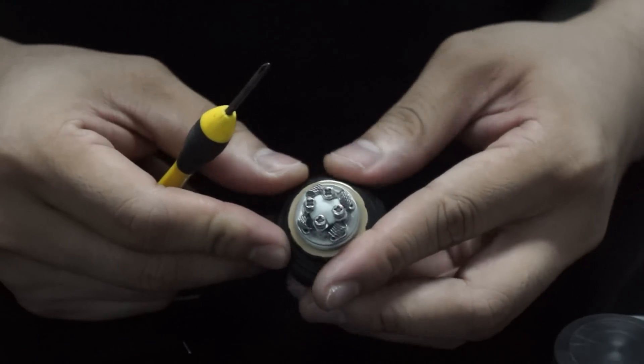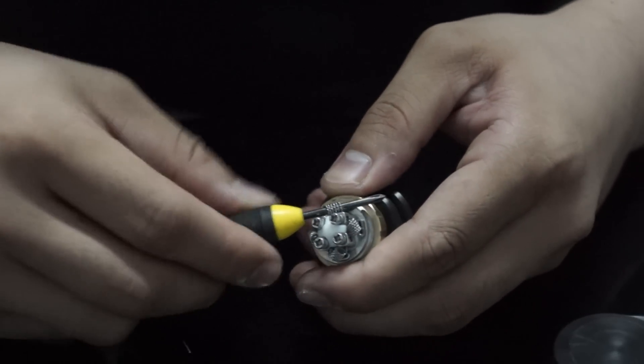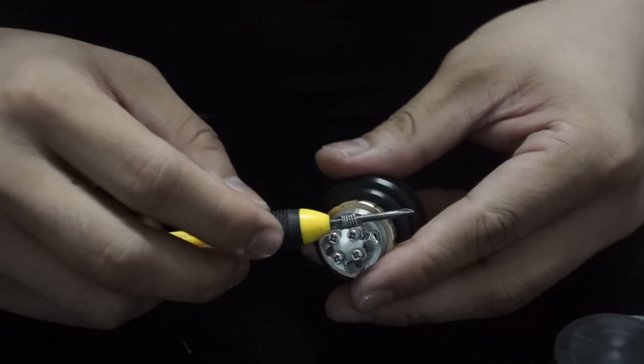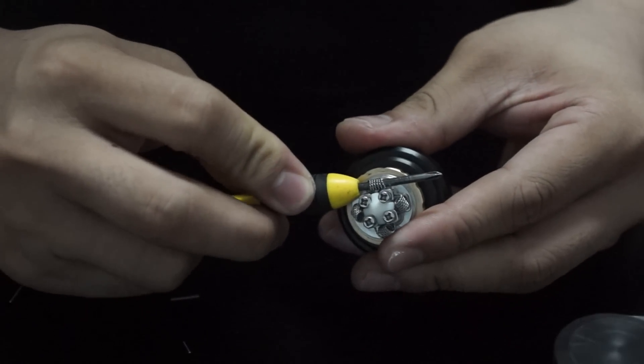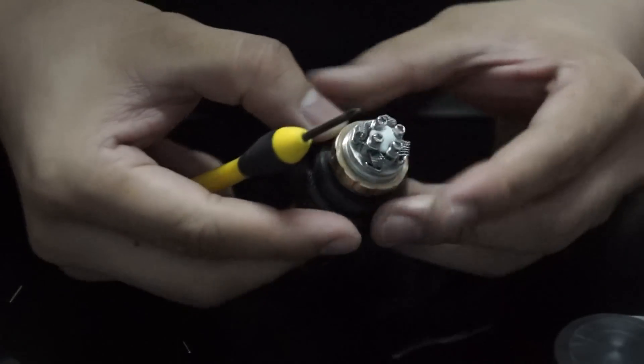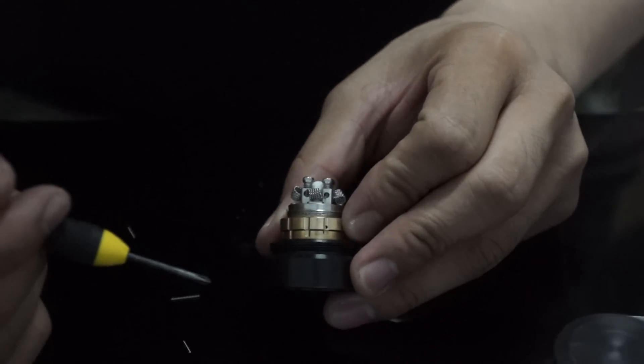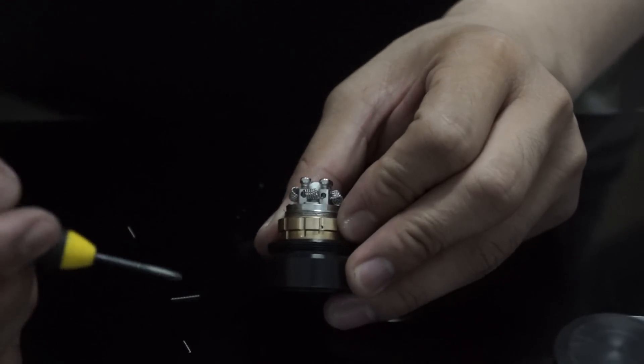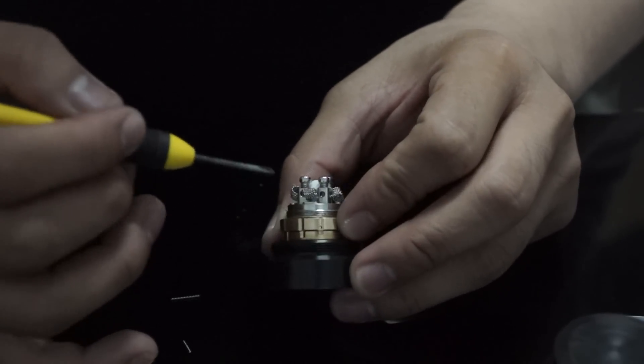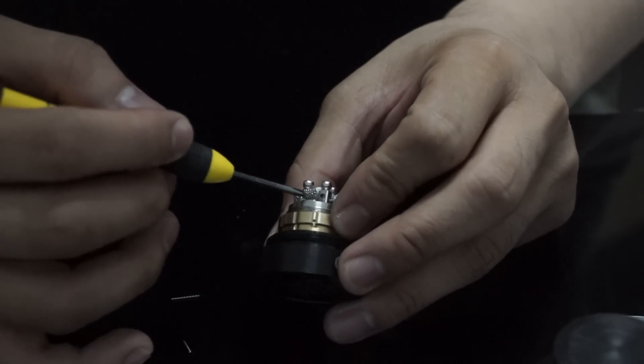Now, what I need to do next is make sure that my coils are neat. So I'll put in the screwdriver. Make sure that it's lined up. But one very important thing to take note of is that you need to make sure that the coils do not touch the base.